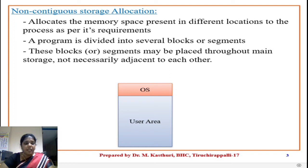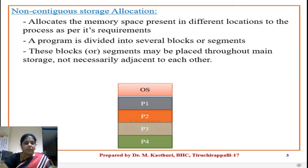Non-contiguous storage allocation is when a system allocates memory space present in different locations to the process as per its requirements. For example, a program is divided into several blocks or segments. These blocks or segments may be placed throughout main memory, which are not necessarily adjacent to each other.